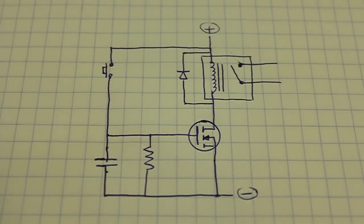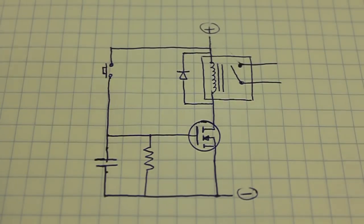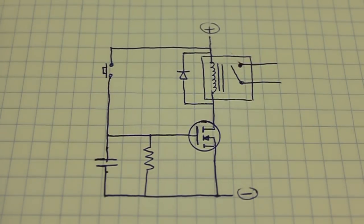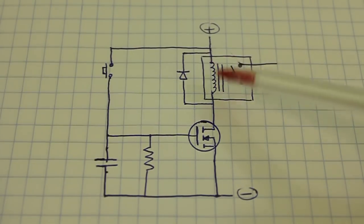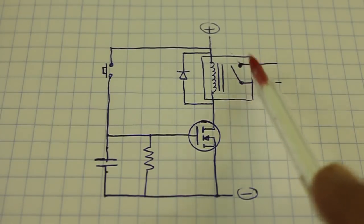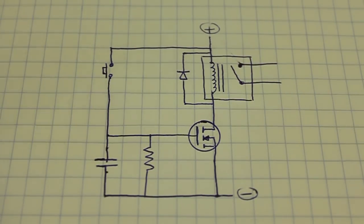But what if we want to turn on a more powerful device instead of a simple LED? Well, in that case, we use a relay. We connect the coil of the relay in place of the LED and now we can use the relay contacts to control more power.